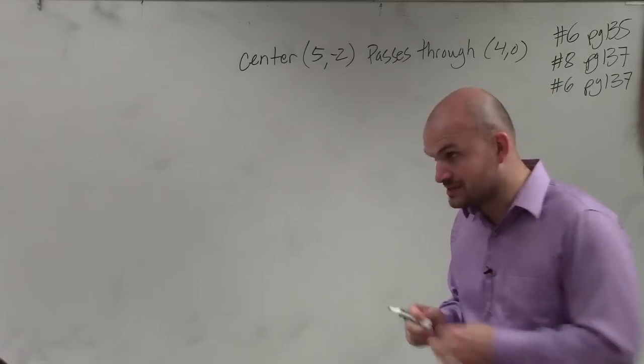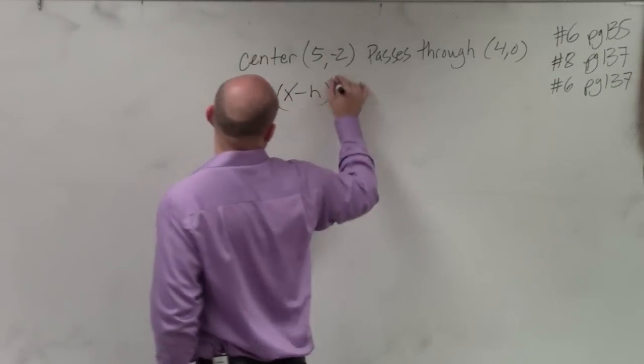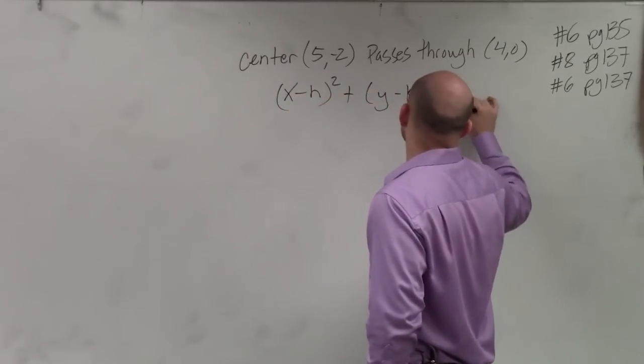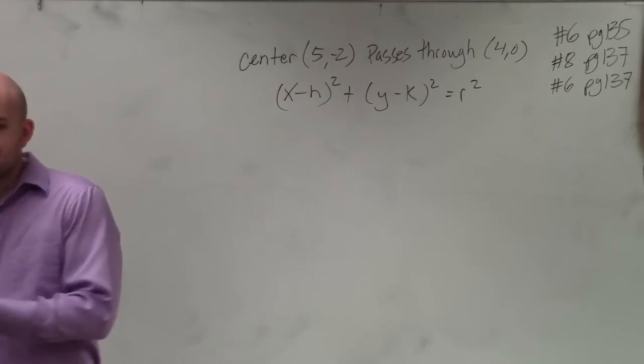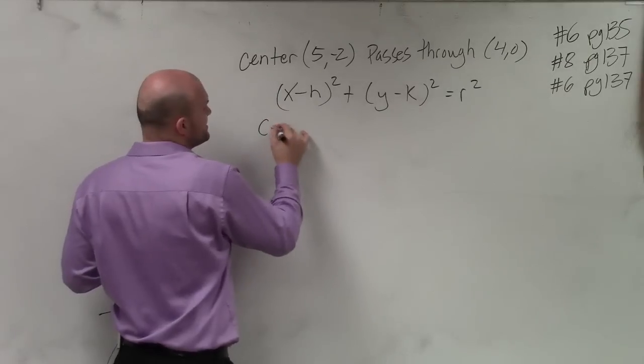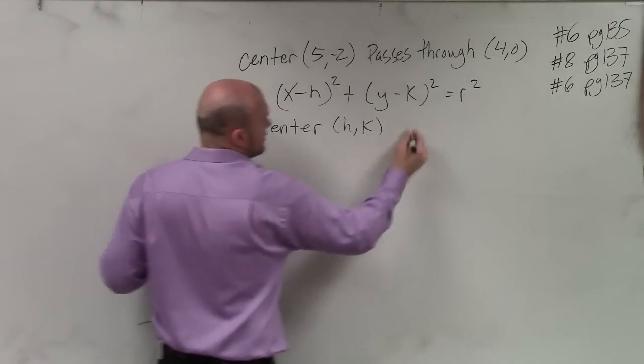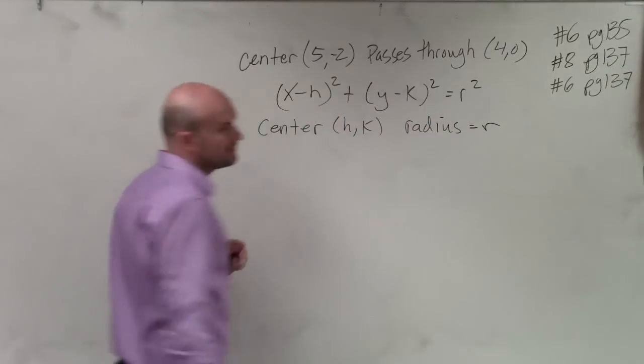Which was in your notes last class period. And that equation is (x - h)² + (y - k)² = r². So to write the equation of the circle, we need to know the center and the radius, right? Because remember, the center is in form of (h, k), and the radius is equal to r.